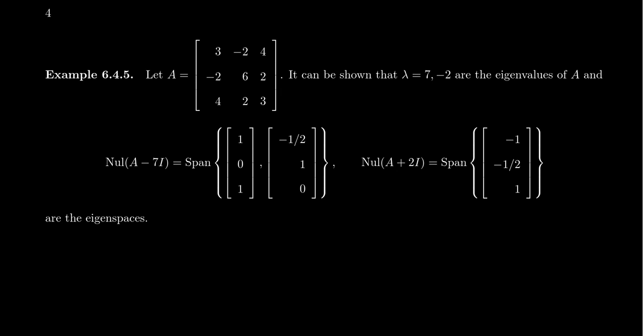One can show that the eigenvalues of this matrix are 7 and negative 2. And when you calculate the eigenbases for these two eigenvalues, the 7 space gets a basis of 1, 0, 1 and negative 1 half, 1, 0. You get that from the RREF of A minus 7i. And then a basis for the negative 2 eigen space. You get negative 1, negative 1 half, and 1.